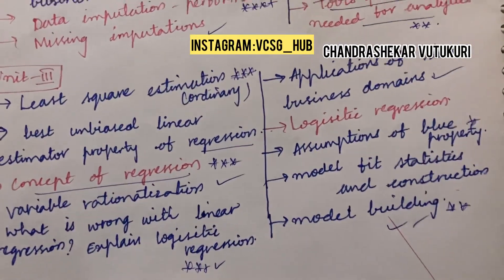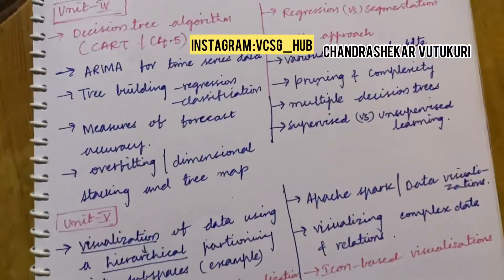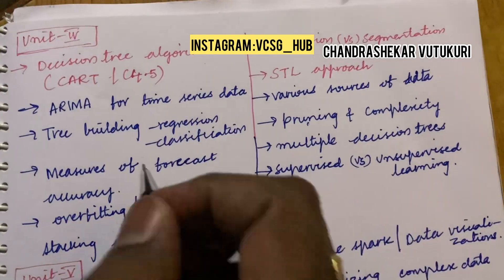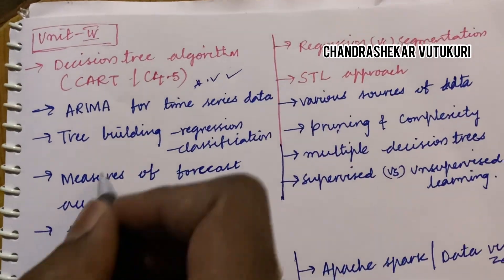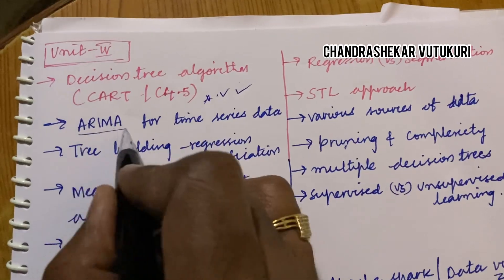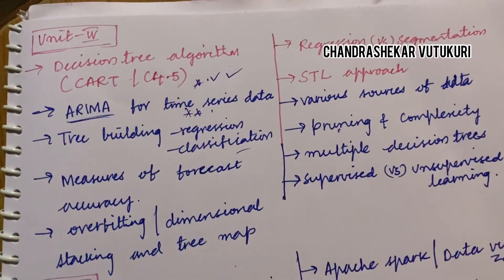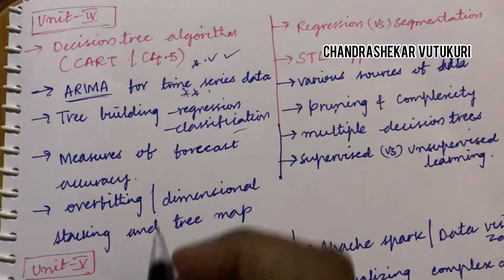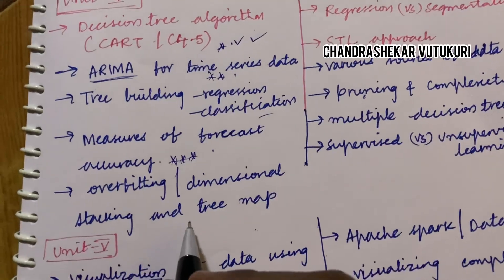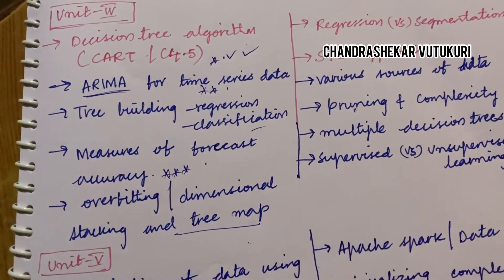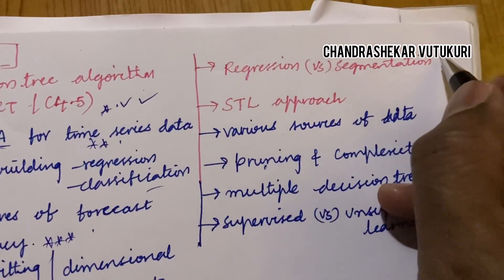These questions are covered from Unit 3 of the course Data Analytics. The decision tree algorithms CART and C4.5 are said to be top most questions. ARIMA for time series data is said to be a short or long question this time. Pre-building regression, classifications, and measures for forecast accuracy are also very important. Define overfitting, dimensional stacking, and pruning — these are very important for a two-mark question.